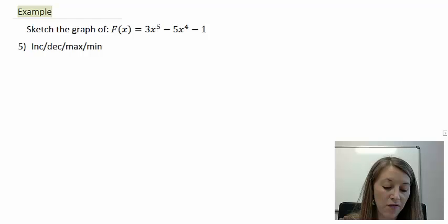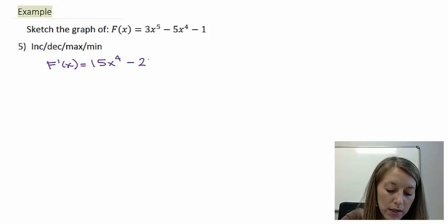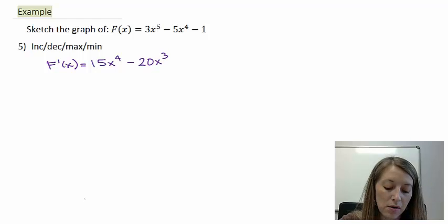Let's move on to step number 5, which is increasing, decreasing, maximum, and minimum. And we do that by finding the first derivative of the function. So that is 15x^4 - 20x^3.